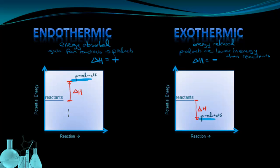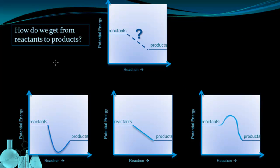Now the real question is: how do we get from the energy of the reactants to the energy of the products? We know it isn't just an instantaneous shift because we saw a transition state when we talked about collision theory. So the next question is: how do we get from reactants to products? We're using an exothermic example, and there are essentially three possibilities.